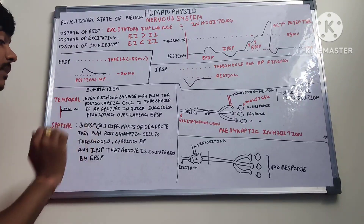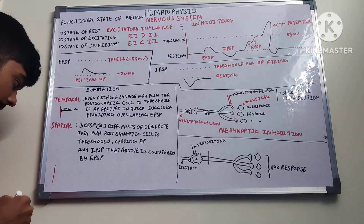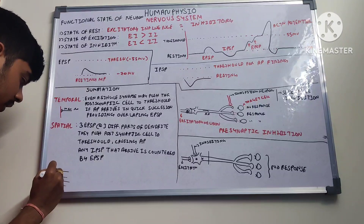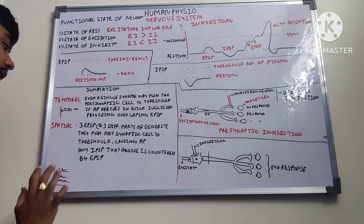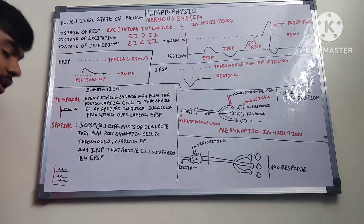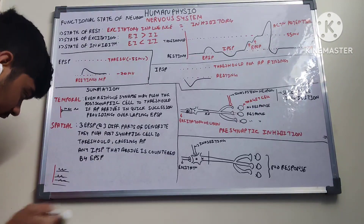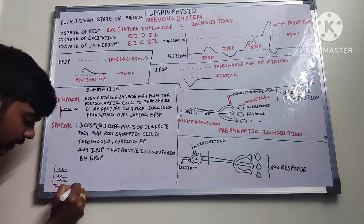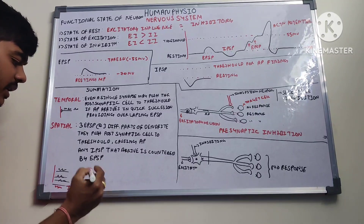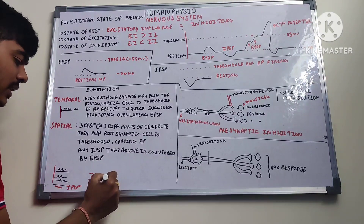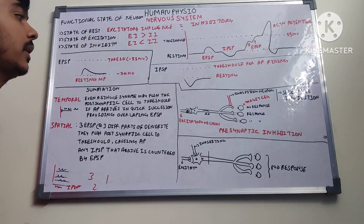Spatial summation: three EPSPs at three different places — from different parts of the dendrite — push the post-synaptic cell to threshold and cause an action potential. Any IPSP arriving at the same time can cancel out an EPSP, so if there are three EPSPs and one IPSP, there are still two EPSPs remaining. This is how spatial summation works.